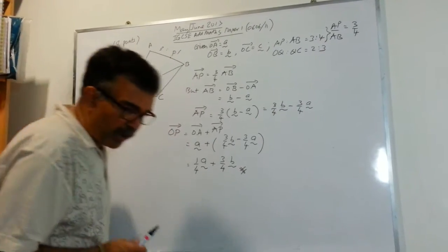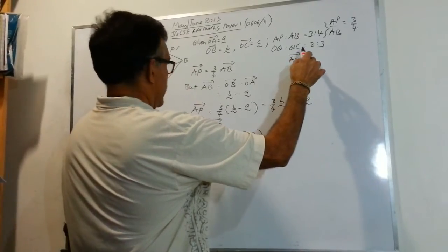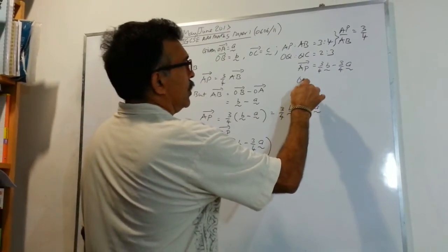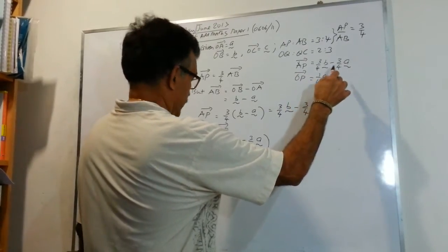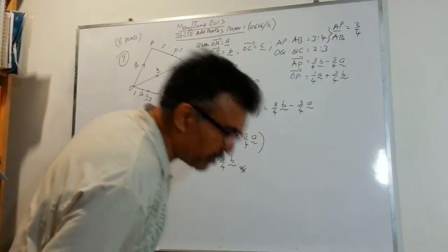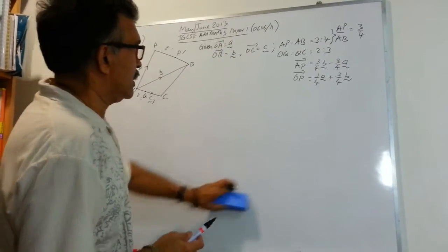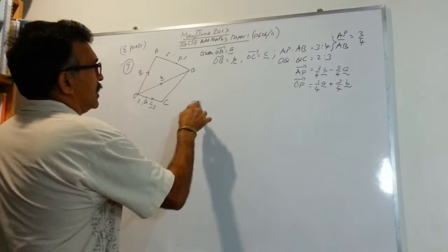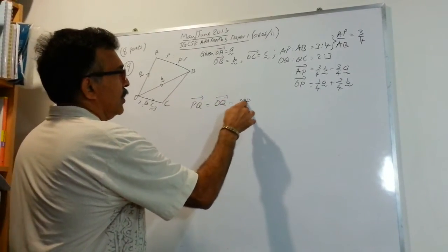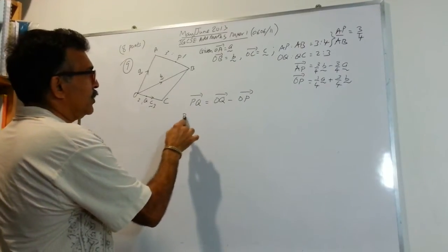And then, they ask us in the second part of the problem, they ask you to find PQ. Let's keep our answers here. AP is 3 over 4 B minus 3 over 4 A and OP is 1 over 4 A plus 3 over 4 B. Let's keep those answers just in case we need to use it. So, now we are trying to find PQ. To find PQ, using the triangular law of vector addition, will be OQ minus OP. That's pretty good. We know OP. All we need to do is find OQ.